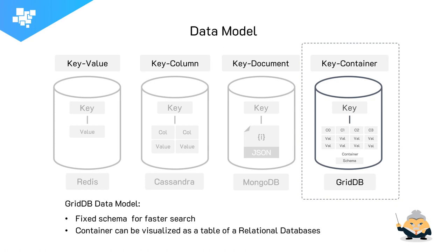You have a fixed schema for fast retrieval and you have ACID, which stands for Atomicity, Consistency, Isolation, and Durability. And you have all that while also benefiting from NoSQL on the database level.